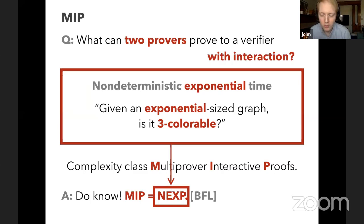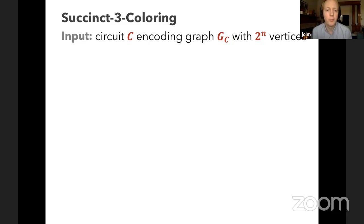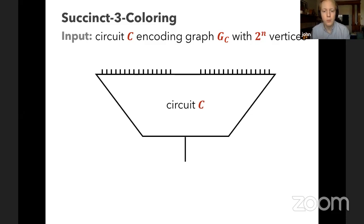This is the succinct three coloring problem. The input is a Boolean circuit C which encodes a graph G_C that has 2^n vertices. The circuit C has two input registers, each consisting of n input bit wires. Although it encodes a graph with exponentially many vertices, the circuit itself is small — polynomial in n — so it can be given as input to an algorithm.